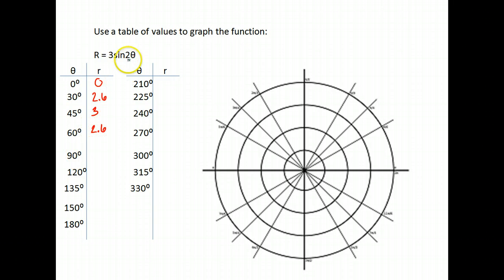90. 2 times 90 is 180. The sine of 180 is 0 times 3 is 0. 120. 2 times 120 gives me 240. The sine of 240 is negative 0.87 times 3 is negative 2.6.